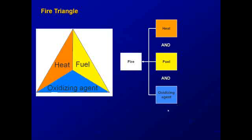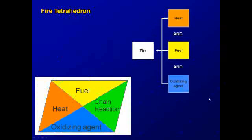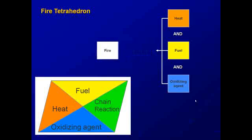In recent years the fire triangle has been replaced with the fire tetrahedron, which is a more accurate representation of what is required to create a fire. Along with fuel, heat, and an oxidizing agent, the fire tetrahedron adds a chain reaction as a cause of fire. Heat, fuel, and oxidizing agent are required to create an uninhibited chain reaction, which results in fire.